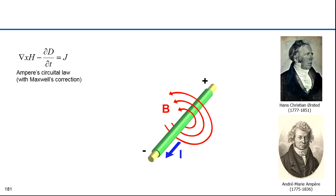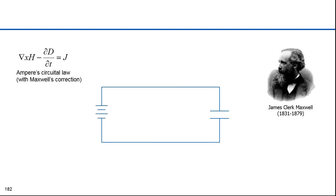The fourth equation is due to Ampere and Maxwell. Hans Christian Orsted noticed a compass needle deflected from magnetic north when an electric current from a battery was switched on and off, confirming a direct relationship between electricity and magnetism. He showed that an electric current produces a circular magnetic field as it flows through a wire. Ampere is credited with developing a mathematical and physical theory to explain this. Maxwell added a correction, suggesting that magnetic fields can also be generated by a changing electric field.